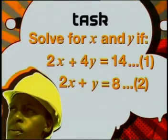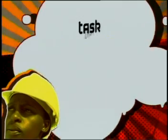Let's see how well you can solve simultaneous equations using the elimination method. Here's your task. Solve for x and y if 2x plus 4y is equal to 14 and 2x plus y is equal to 8. That brings us to the end of today's lesson. In our next lesson we'll learn some more advanced methods of elimination. Until then, goodbye.